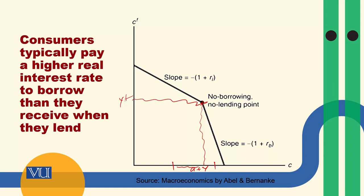اگر وہ lending کرے گا تو اس کو جو interest rate ملے گا وہ کم ہوگا — جیسے normally bank میں آپ پیسے deposit کرتے ہیں تو bank آپ کو جو interest rate دیتا ہے وہ اس سے کم ہوتا ہے جب آپ bank سے loan لیتے ہیں۔ تو اس no borrowing no lending point سے left کی جانب جو budget constraint ہے اس کا interest rate کم ہے — یہ lending phase ہے۔